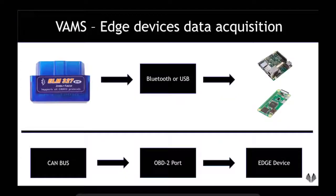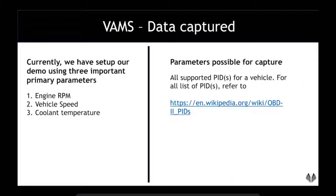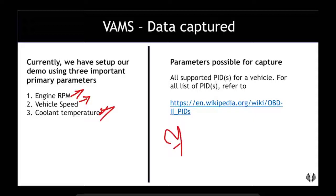For edge devices in VAMS, we use the ELM327 IC for capturing data and transferring it over Bluetooth or USB to the Raspberry Pi. From the Raspberry Pi, we use the internet to transfer it to the Azure IoT Hub. The data captures we are interested in include engine RPM, vehicle speed, and coolant temperature. However, we can get as many as 73 parameters depending upon the class of the vehicle.